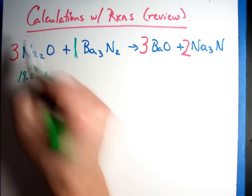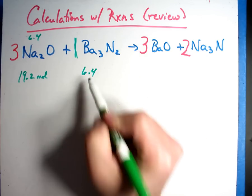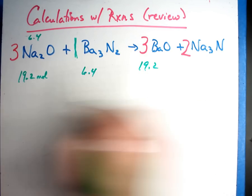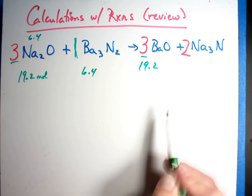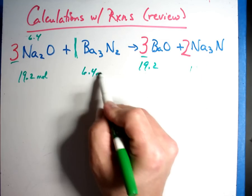And that's a change of 6.4, and you multiply everybody by that. So this is 6.4, this one's 19.2 because these are both threes, and 6.4 times that is 12.8. They're all in moles.